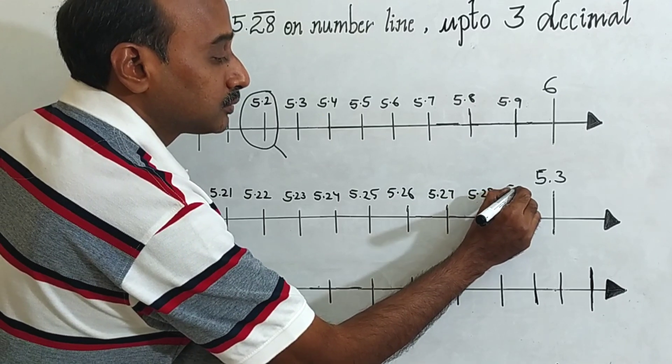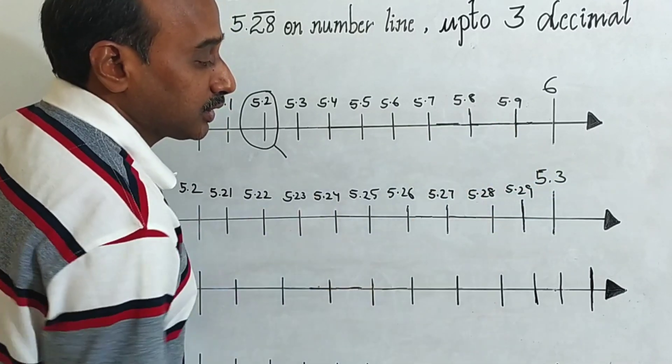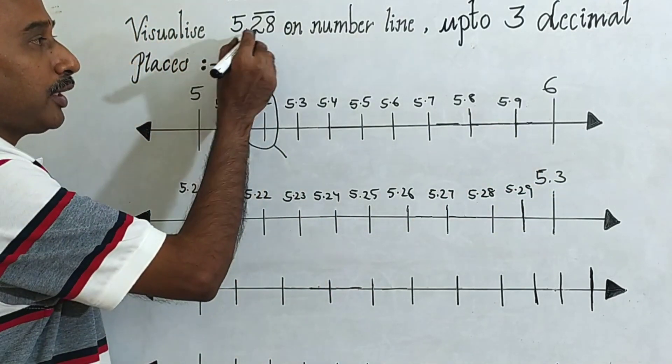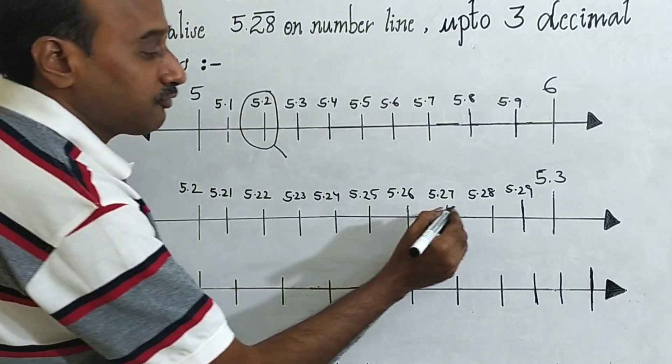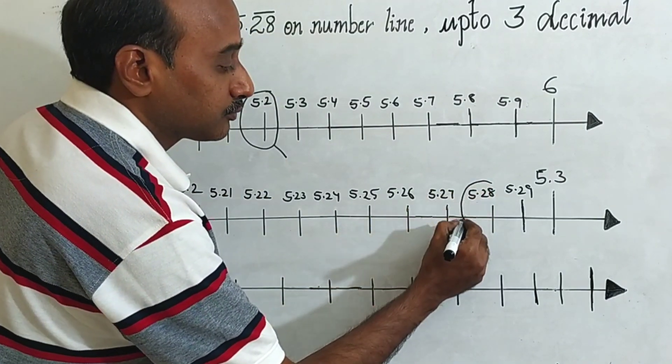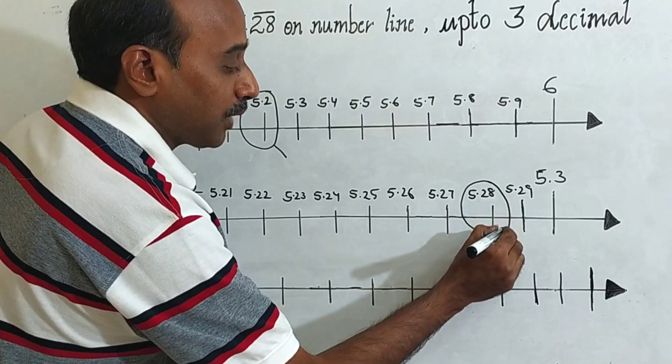5.28, 5.29, this is 5.3. Now come to 5.28. Where is the 5.28? Here you can see this. You have to magnify it.